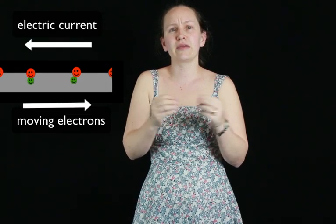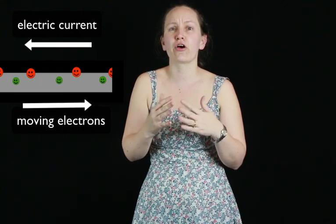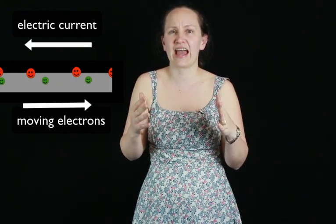Moving charges are called an electric current. In metal wires, it's the electrons that move, conducting the current, as the electrons are only loosely bound to the atom.